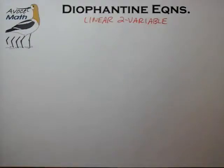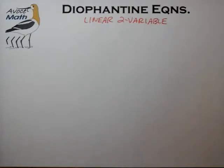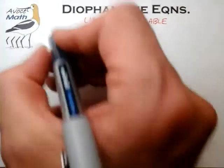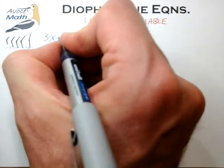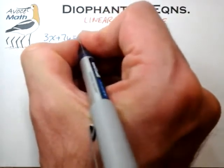Hello and welcome back to Avocet Math. In this video we're going to delve into the linear two-variable Diophantine equation. The linear two-variable Diophantine equation is not factorable, so this equation type does not lend itself to the methods described in previous videos. We're going to develop a few new methods to attack this specific type of equation. Let's jump right in with a prototype example equation: 3x plus 7y equals 41.